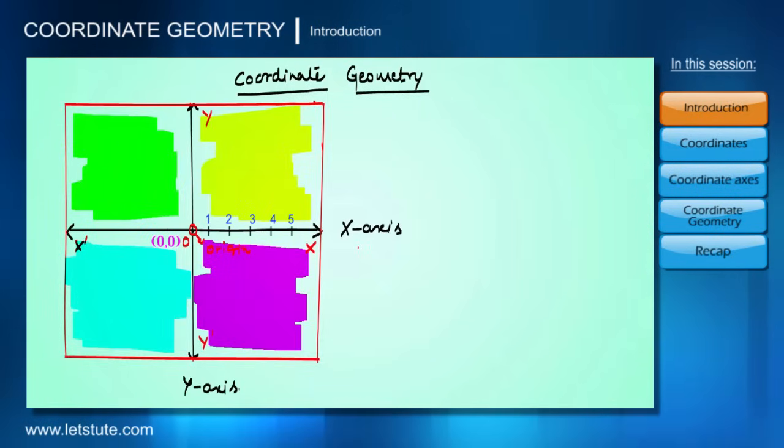Similarly, the y-axis possesses positive values above the origin and negative values below the origin. These values of the x and y axes help us find the location of any point on the plane. For example, here is a point.